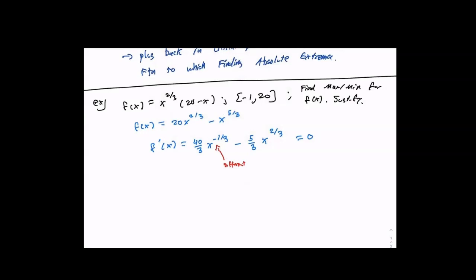Whenever I have negative powers, I always want to make things into a single fraction. So I'm going to write this as 40 over 3x to the one-third minus 5x to the two-thirds over 3, and make this into a single fraction with a common denominator. I multiply the right term by x to the one-third over x to the one-third, giving me 40 minus 5x — since two-thirds plus one-third equals one — over 3x to the one-third.